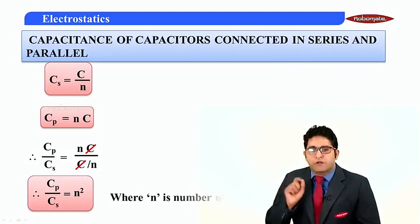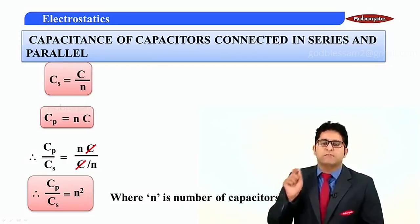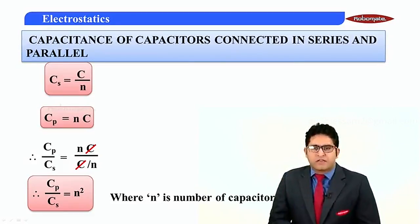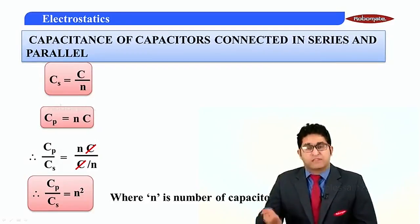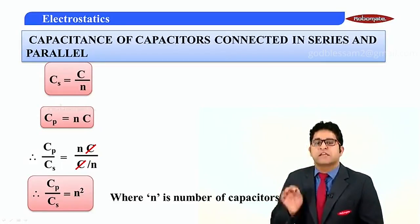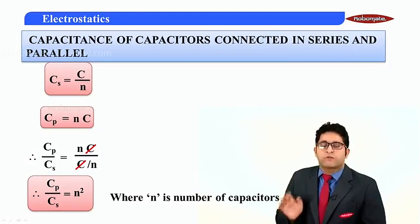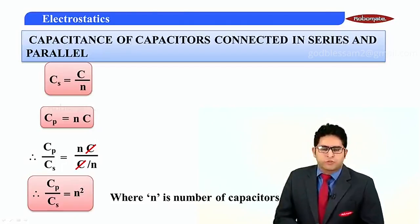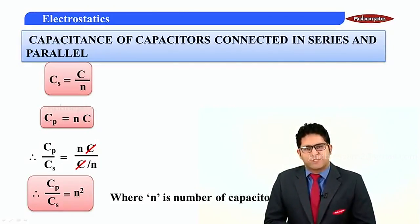So, where N is the number of identical capacitors each having capacitance C — if they are connected in parallel and then in series, the ratio Cp/Cs = N². This relation is very important from the entrance examination point of view, so make sure you write it down properly. That's it for this module. I will see you in the next module. Till then, keep learning.